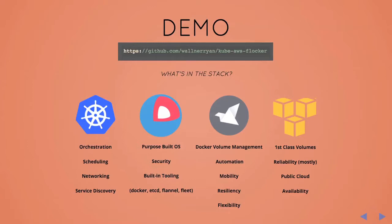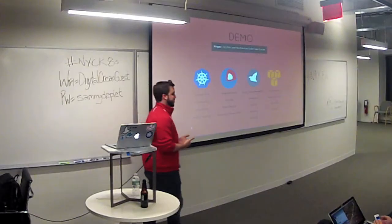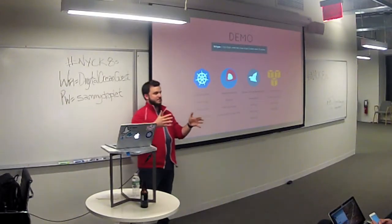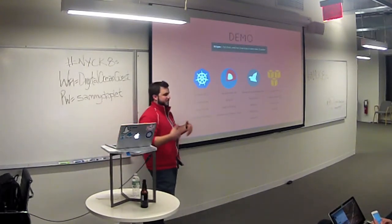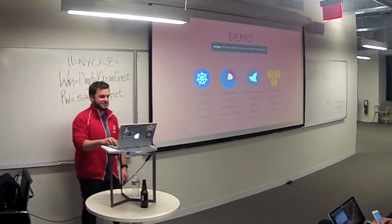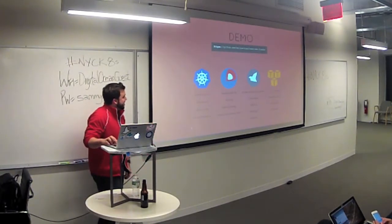I'm going to use this specific stack: from left to right, Kubernetes for scheduling, orchestration, and networking layers, running on top of CoreOS. I'm using a tool called kube-aws to run Kubernetes on CoreOS on Amazon EC2. My data layer is Flocker installed on the same nodes as my Kubernetes nodes — the same EC2 instances. Underneath that I'm using Amazon EBS block storage. That's the stack I chose for this demo.